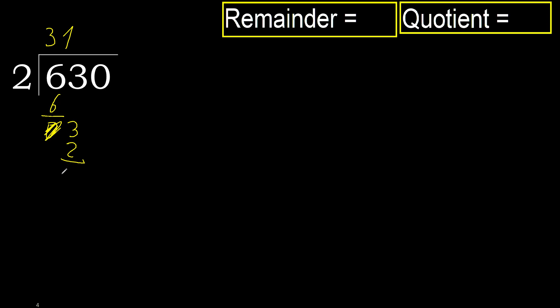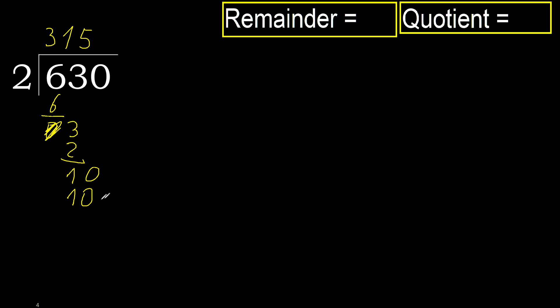3 minus 2 is 1. Next, bring down 0 to get 10. 2 multiplied by 5 is 10.